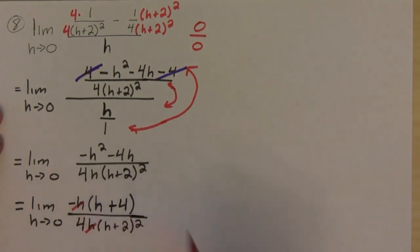And if I plug in 0 now, I get, on the numerator I'm going to get, so don't forget the negative, so I'm going to be negative 4 over, 0 plus 2 is 2, 2 squared is 4, times 4 is 16, or negative 1 over 4. And that's the answer.